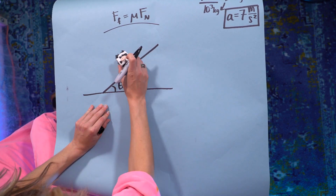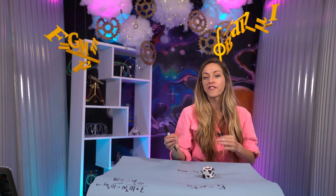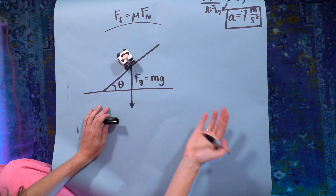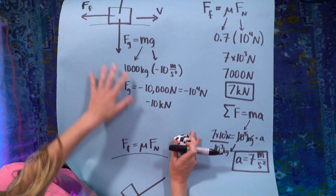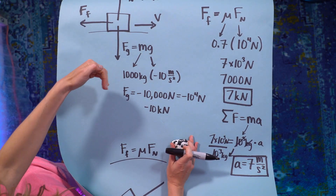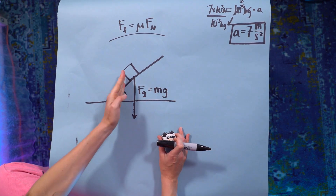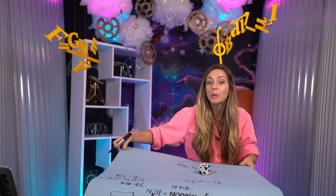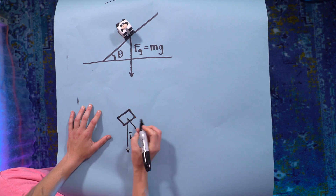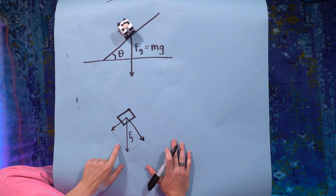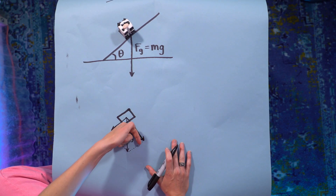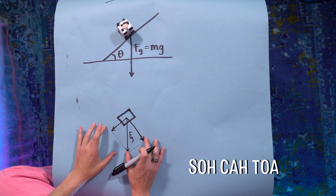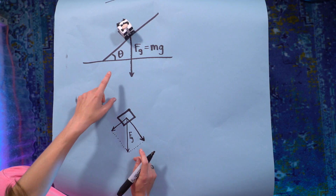Let's think about the forces involved. We have a downward gravitational force, mg. To think about the friction forces, we need to figure out what the normal force is — the force perpendicular to the surface. In the car example, the surface was flat, so the normal force was just straight up and down, opposite gravity. But now gravity is pulling at an angle relative to our surface, and it's not a 90-degree angle. So the gravitational force is doing two things — let's break it up into its two components.